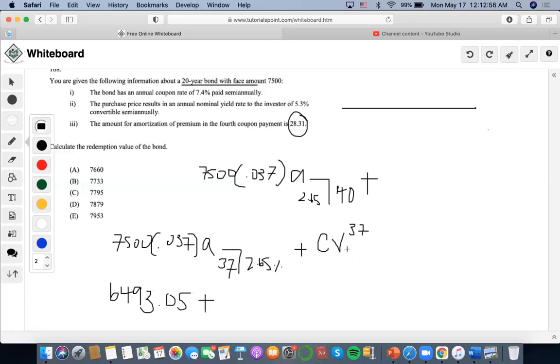We will do 1.0265 to the negative 37, and get 0.377 as the price, as the book value of the third coupon.